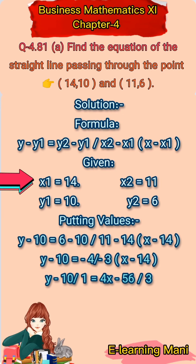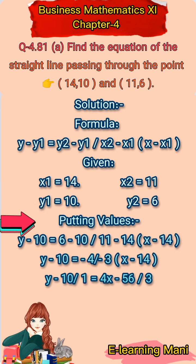Bracket में जो first value होगी वो x होगा और जो second होगी वो y होगी। So 2 brackets given हैं, इसलिए हमने x1, y1, x2, y2 name दे दिए। अब formula में putting values करेंगे। y minus y1 की value 10 है, is equal to 6 minus 10 upon 11 minus 14, multiplied by x minus 14.